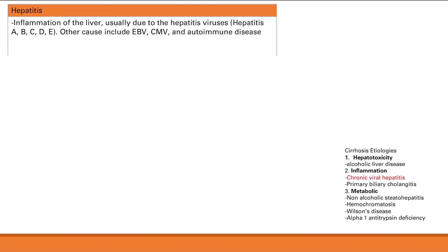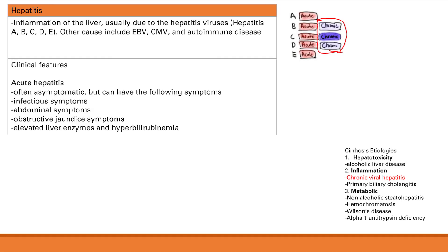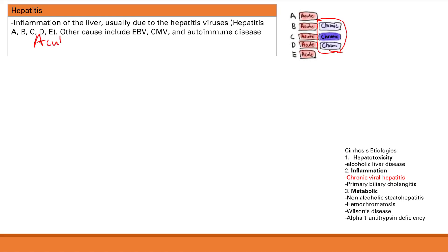Normally, looking at just the hepatitis viruses, they all can cause acute disease, acute symptoms, acute infection. However, a couple of them can actually persist and end up causing chronic liver disease — that's B, C, D. The nice way to remember that is that acute only is from the A and E viruses, and B, C, D can persist and cause chronic disease. Hepatitis C is much more likely to cause chronic disease than hepatitis B or D.